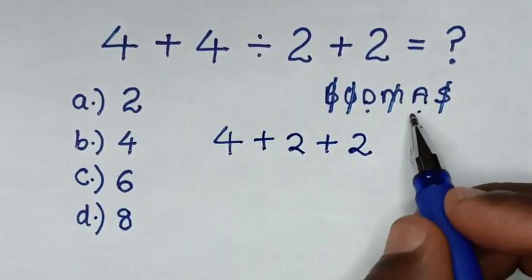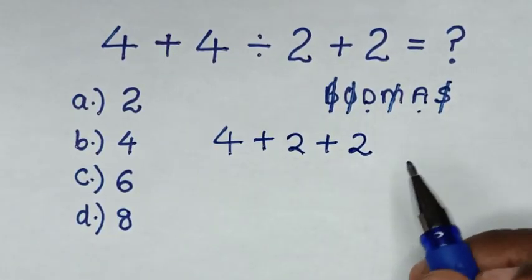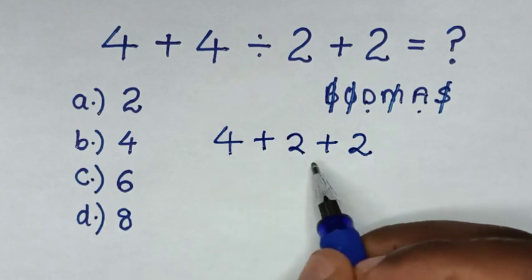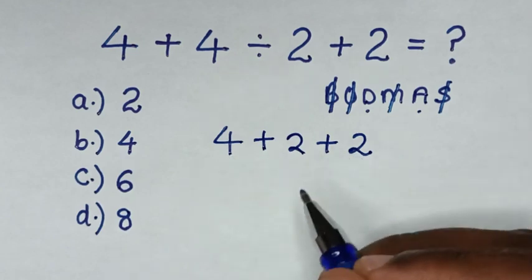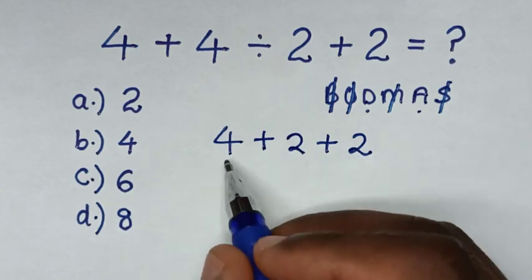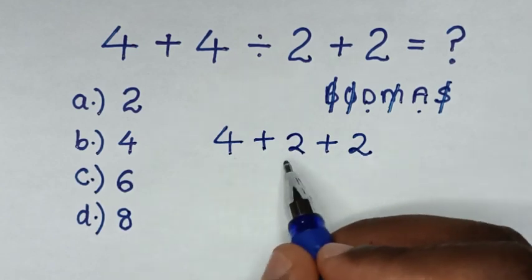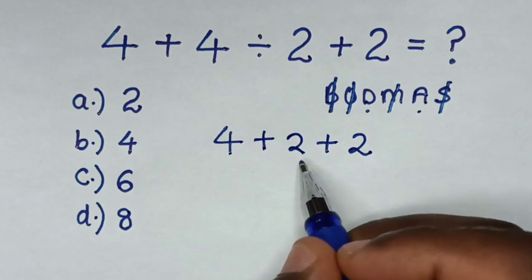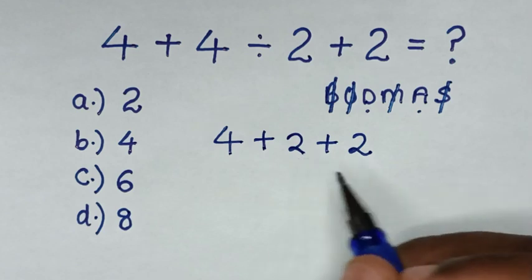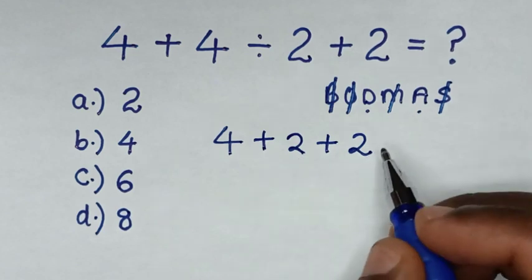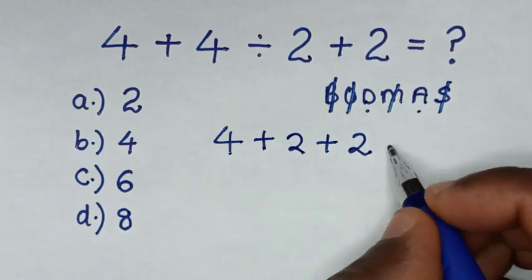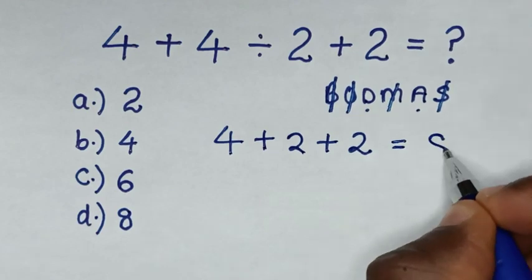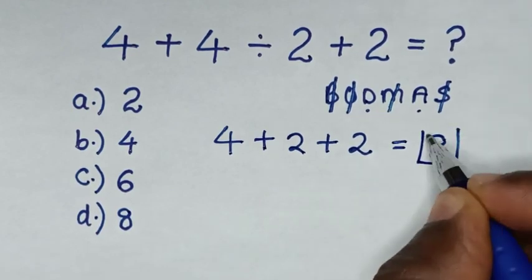Now we are left with addition — we have 2 additions. So we start with the first addition: 4 plus 2 is 6. Then 6 plus 2 is 8. So our final answer is 8.